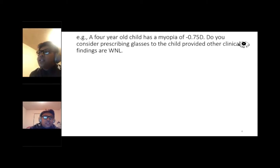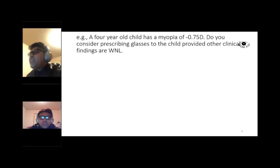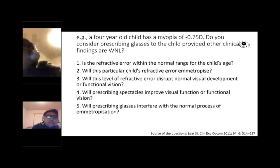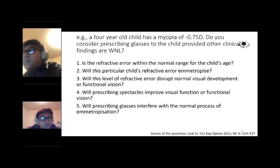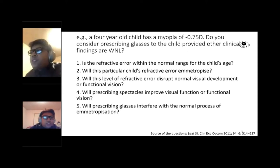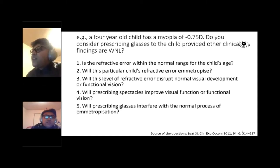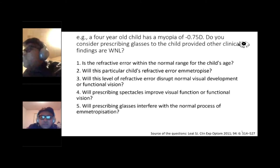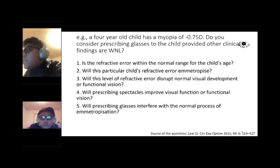Here is a hypothetical example: a four-year-old child has myopia of minus 0.75 diopters. Do you consider prescribing glasses, given that other clinical findings are within normal limits? For this question, there are five sub-questions: Is the refractive error within the normal range for the child's age? Will this refractive error emmetropize? Will this level of refractive error disrupt normal visual development? Will prescribing spectacles improve functional vision? Will prescribing glasses interfere with normal emmetropization? This source is from the Journal of Clinical and Experimental Optometry.